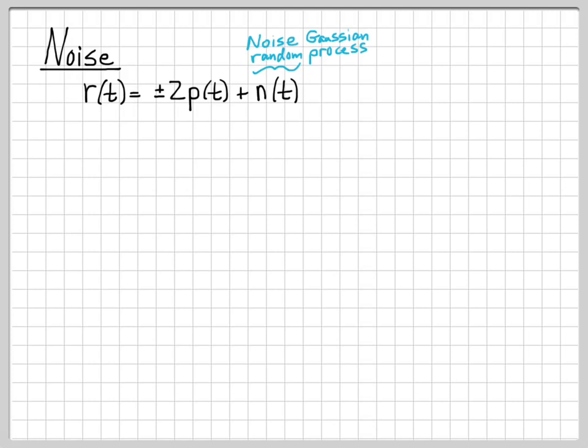We haven't gotten to random processes in this class yet — we'll get to that later. For now, you only need to know a few things. Think of N(T) as a noisy signal that is corrupting what was transmitted, either 2P(T) or minus 2P(T).